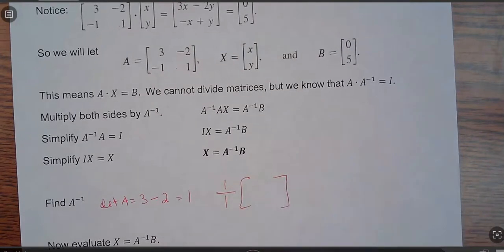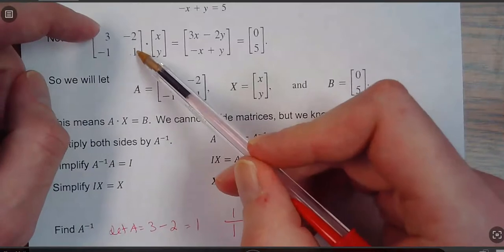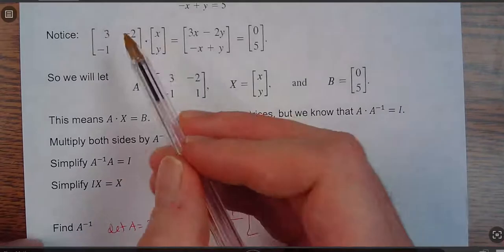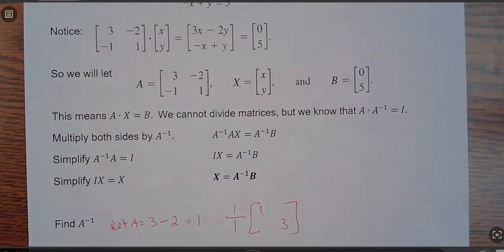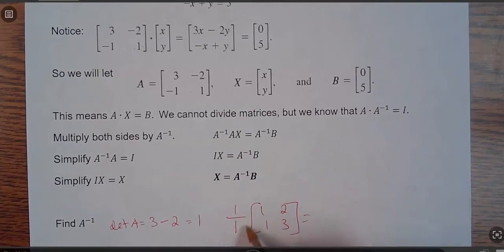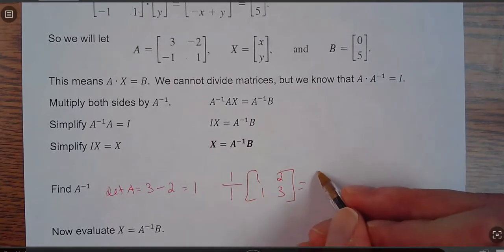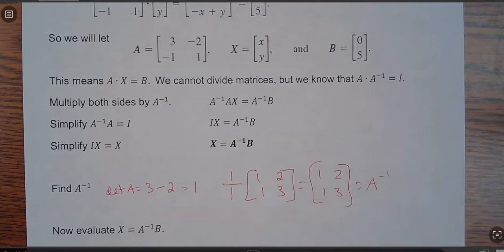Then I take 1 over the determinant times, and remember, I've got to switch so that A and the D switch places. So now instead of 3 and 1, this is now 1 and 3. And then the B and C are going to switch signs. They get negated, so now they're 2 and 1. Now this scalar is just 1, so that means my inverse is 1, 2, 1, 3. That equals the inverse.